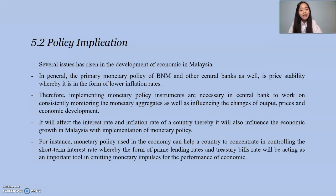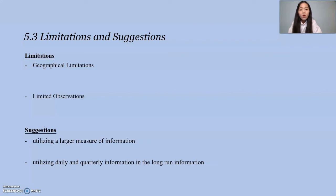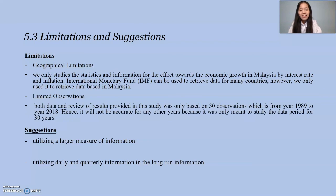For instance, monetary policy used in the economy can help a country concentrate on controlling the short-term interest rate, whereby prime lending rates and treasury bill rates will act as important tools in admitting monetary impulses for the performance of economics. Moving to 5.3, Limitation and Suggestions. We have two limitations in this research. The first one is geographical limitations. We only study the statistics and information for the effect towards the economic growth in Malaysia by interest rate and inflation. IMF can be used to retrieve data for many countries; however, we only used it to retrieve data based in Malaysia. The second limitation is limited observations. Both data and results provided in this study were based on only 30 observations from year 1989 to year 2018.